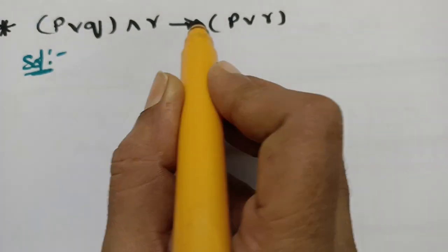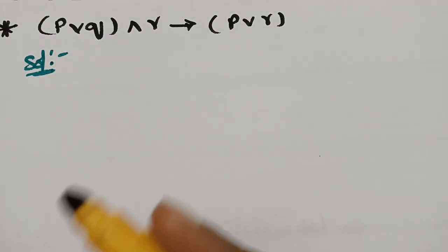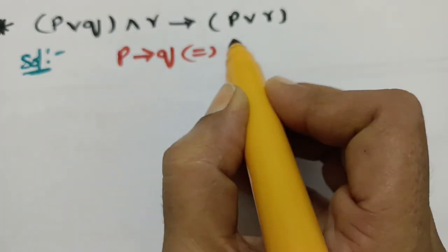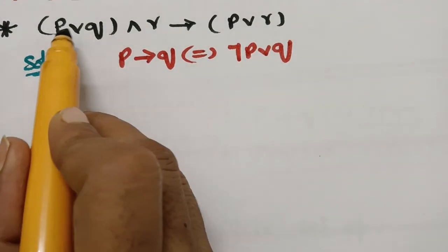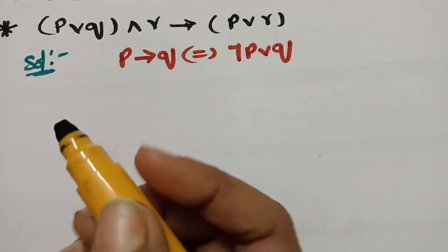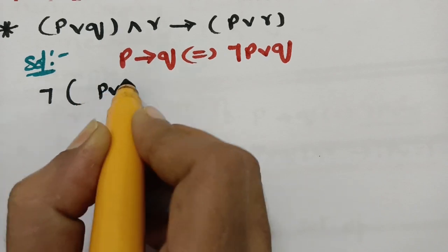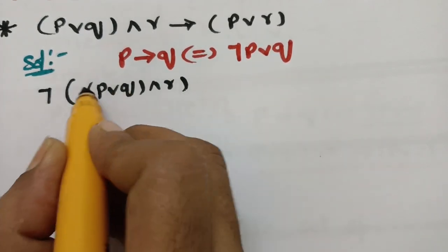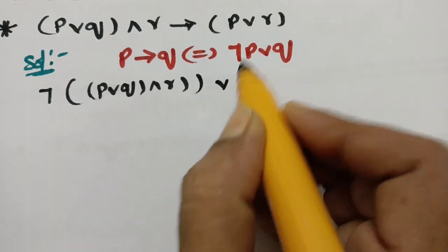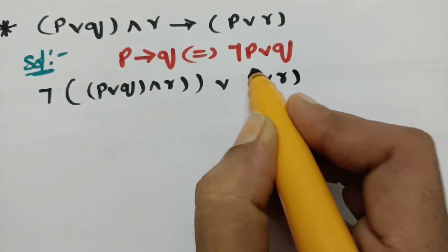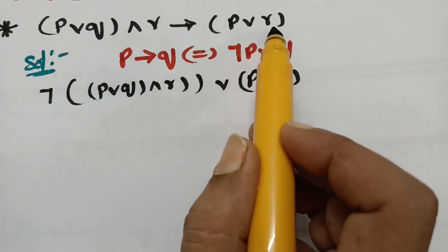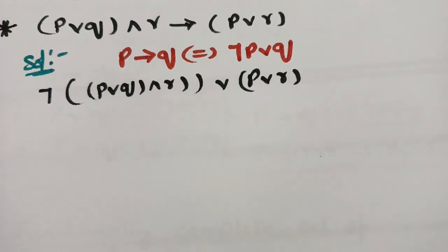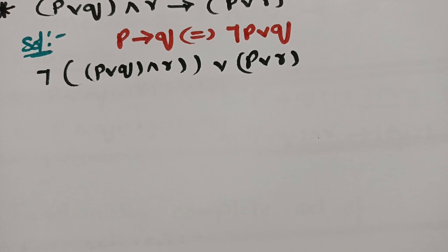The fourth example is (P∨Q) ∧ R → (P∨R). This has disjunction, conjunction, and implication — three kinds of connectives. Applying the formula P→Q ≡ ¬P∨Q, I consider (P∨Q)∧R as P and (P∨R) as Q. So the equivalent becomes negation of (P∨Q)∧R, or (P∨R).